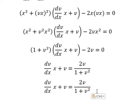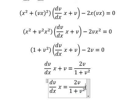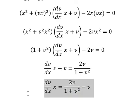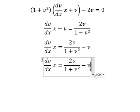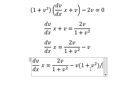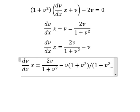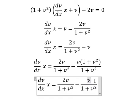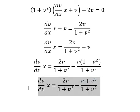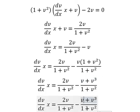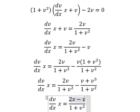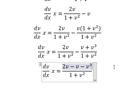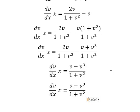Next I will put v to the right — you get negative v. Now we do common denominator. This gives v plus v to the power of 3. So 2v minus v gives v. Now we put this term to the left, and x terms to the right.